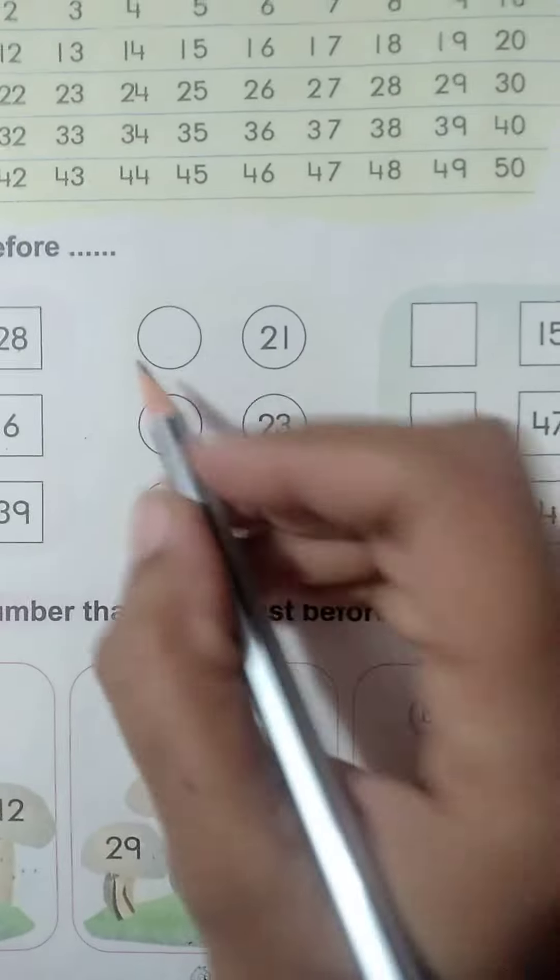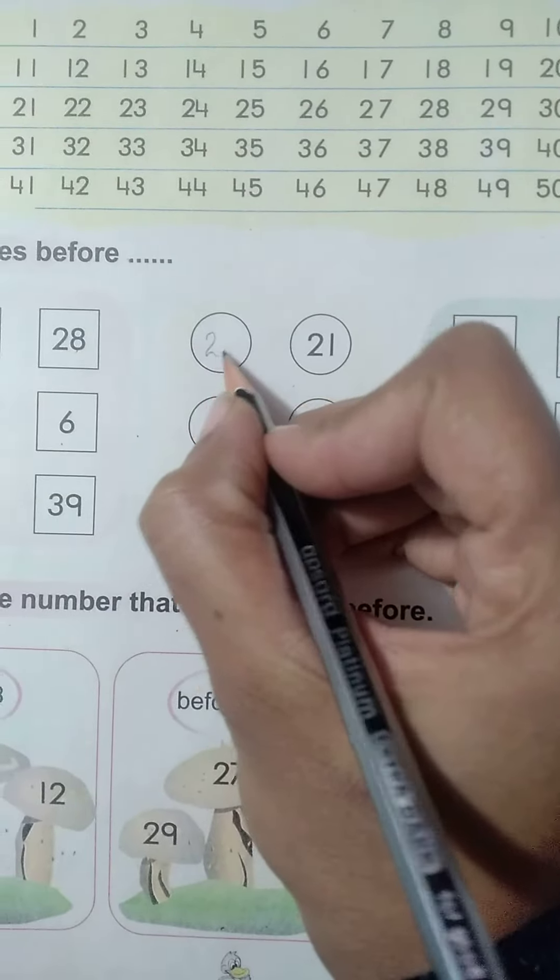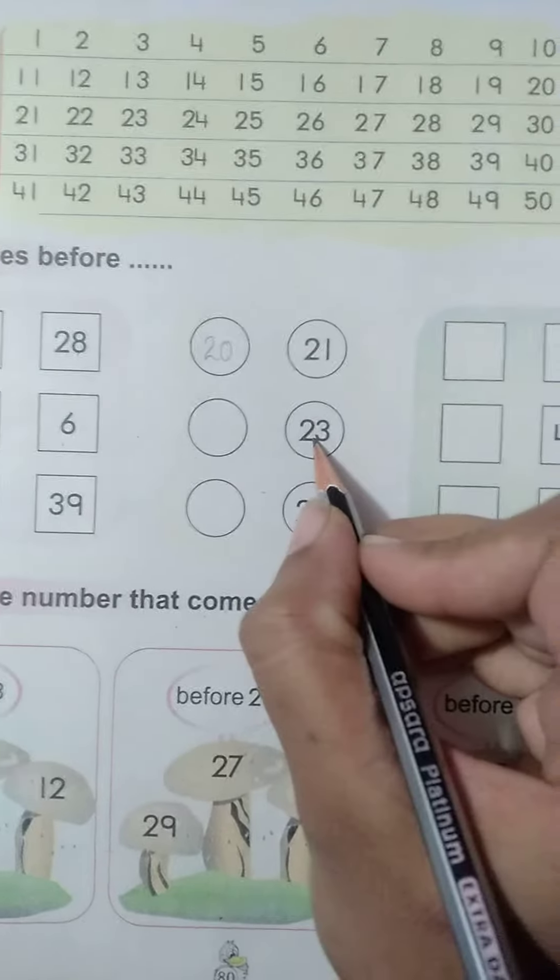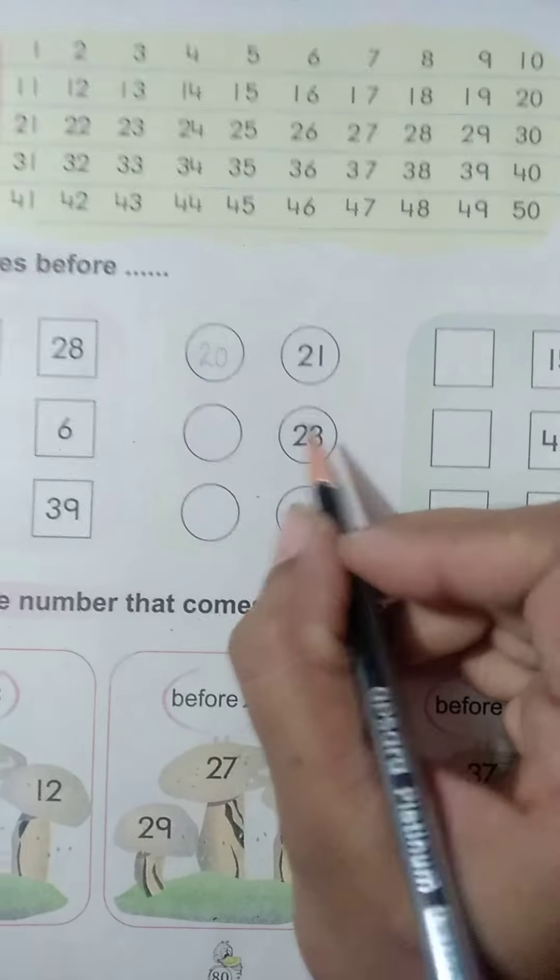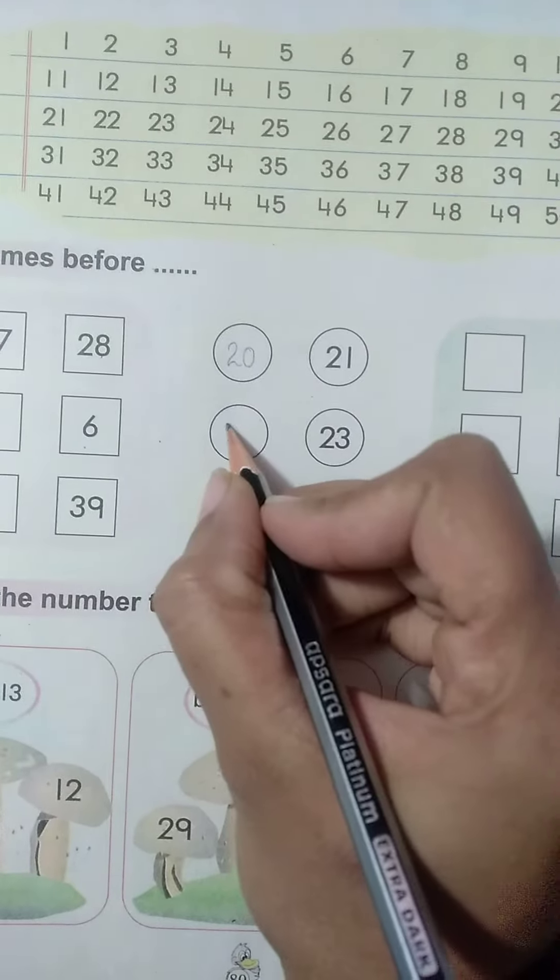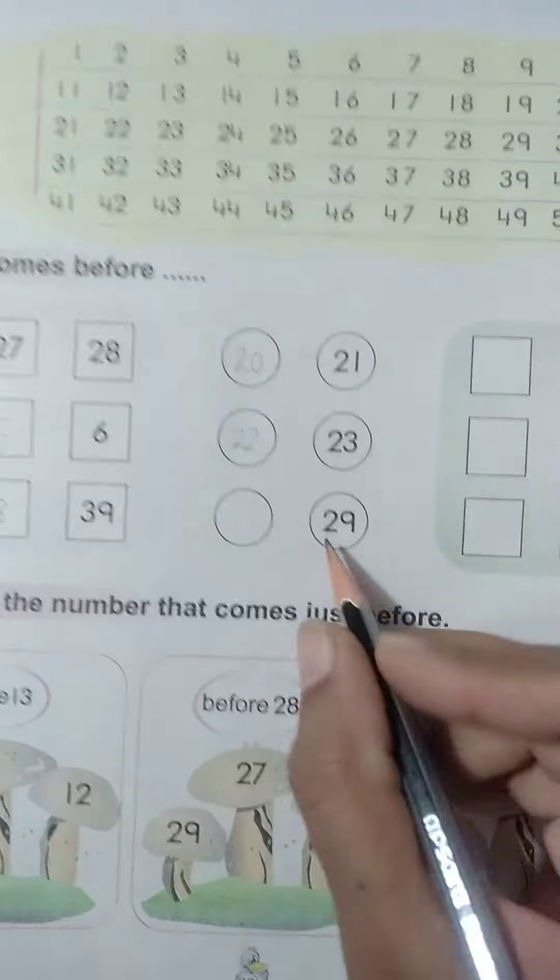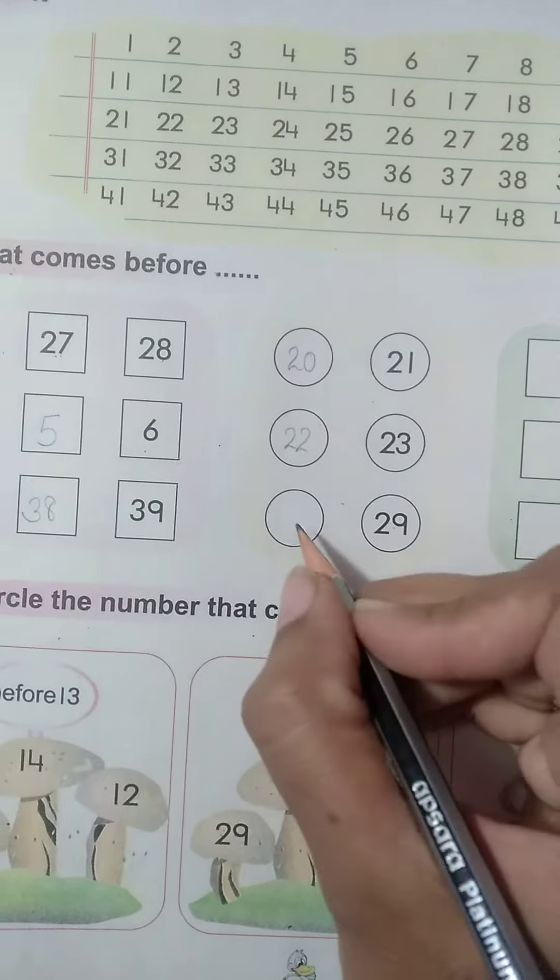Before 21 what will come? 20. 2, 0, 20. Before 23 what will come? 22. What comes before 29? 28.